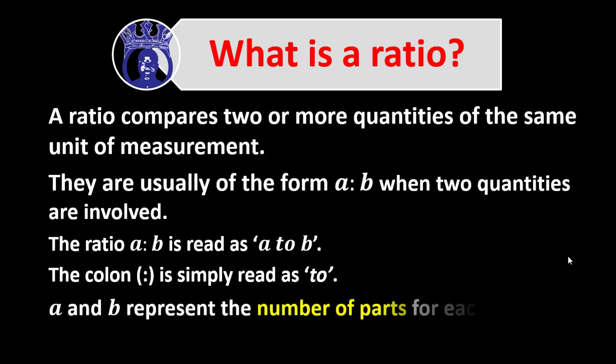A and B represent the number of parts for each particular quantity. I am not saying that A and B represent the total amount for each particular quantity — they are just the number of parts. If you are going to use a unit part to represent quantities, then A and B represent the number of parts for each. You'll soon understand what I mean.